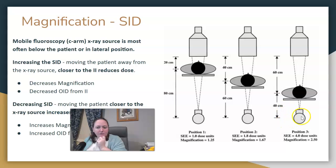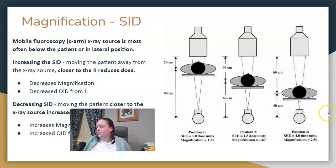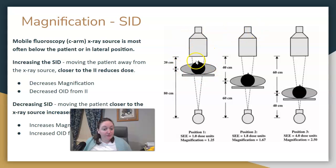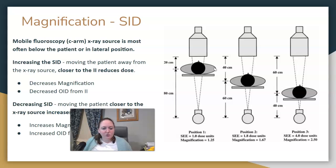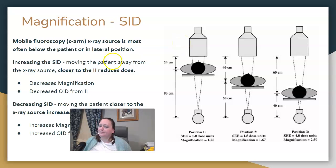We want to make sure we're aware of the source to the patient's skin, because there are set distances we need to follow to make sure we aren't being harmful to the patient's skin or increasing their dose more than necessary. Magnification is your size distortion — it's caused by OID and SID. To reduce magnification, you would bring the patient closer to the image intensifier or reduce your OID.